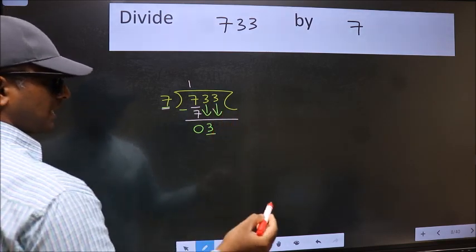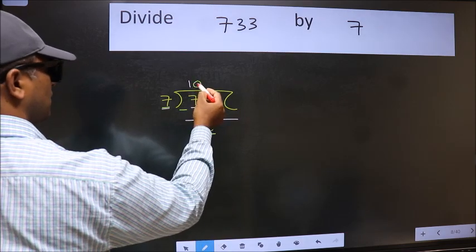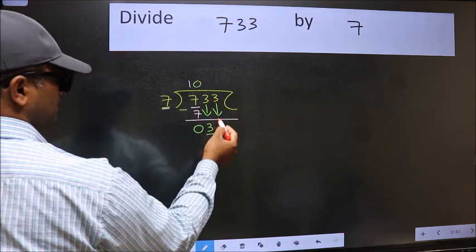And the rule to bring down second number is we should put 0 here. Then only we can bring this number down.